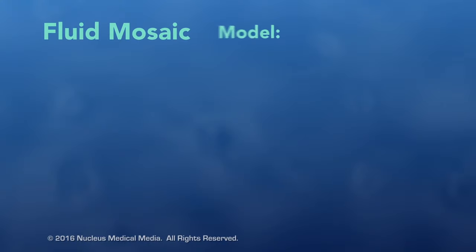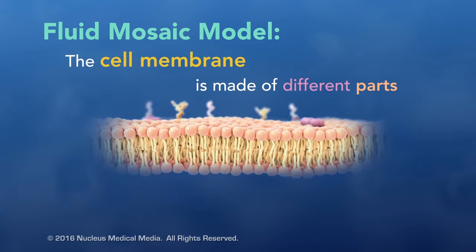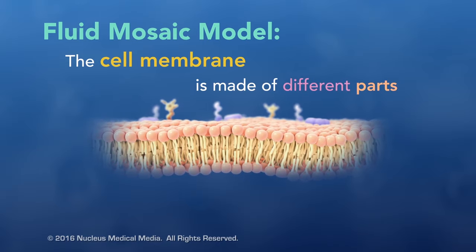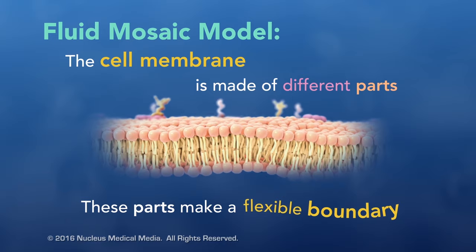So, in the fluid mosaic model, the cell membrane is made up of different parts, and these parts make up a flexible boundary around the cell.